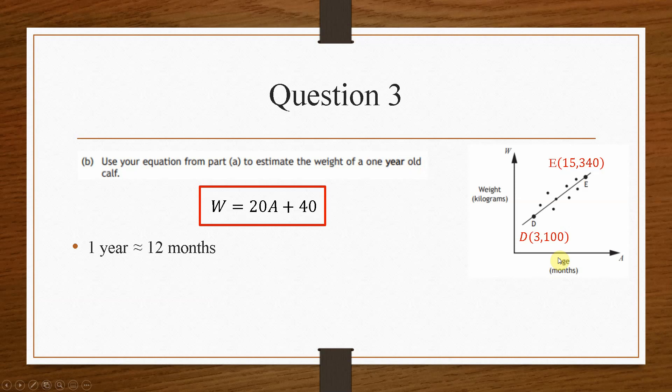Now, if we look at the x-axis, the age is given in months. So we need to convert one year into months. So one year obviously being 12 months. So we then replace A with 12.